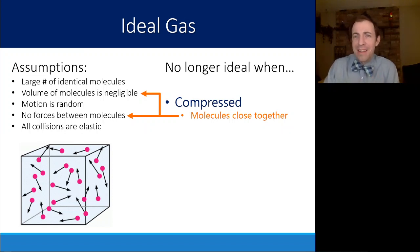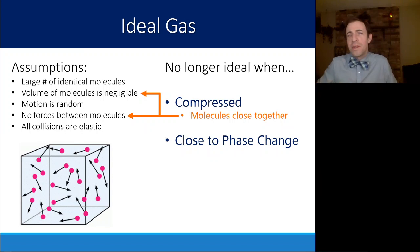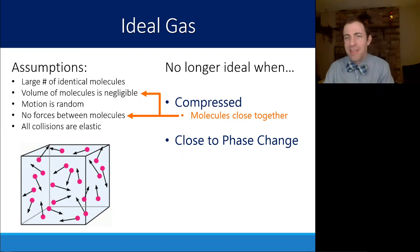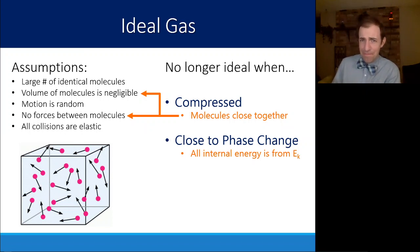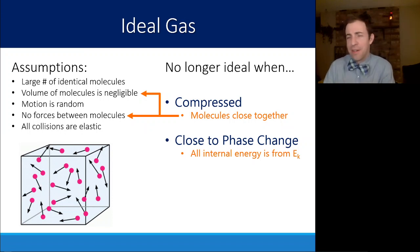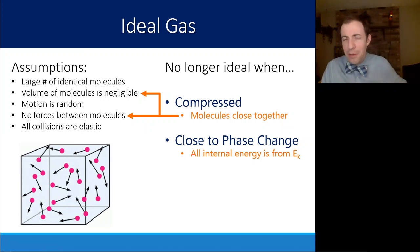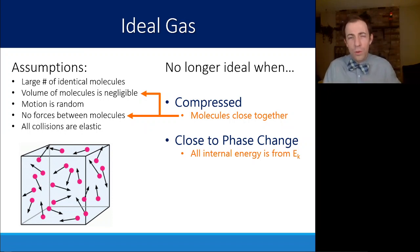That leads us to the other main way a gas is no longer considered ideal: when it's close to a phase change. If it's really close to the temperature boundary or pressure level at which it would change phase from a gas into a liquid, all the internal energy is coming from kinetic energy, and that changes the overall way the gas functions. So we want to make sure we are not compressing the gas and it's not super close to becoming a liquid. Other than that, we'll assume all gases from here on out are ideal.